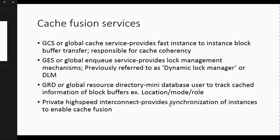In terms of the notable Cache Fusion services, the first one is the Global Cache Service. Basically what it does is provide fast, instant block transfer, and it's also responsible for cache coherency. If you have blocks of data — buffer blocks — being transferred, that allows for readability and accessibility to the user, and consistency of that data being read. The next Cache Fusion service is the Global Enqueue Service, which provides locking mechanisms inside the RAC environment. In previous versions it was referred to as the Distributed Lock Manager, or DLM.